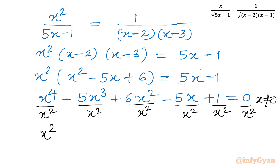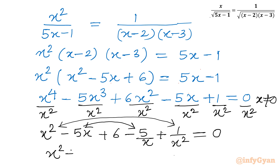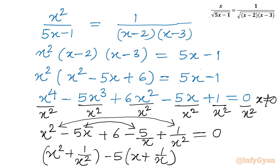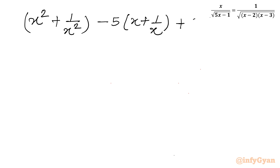After dividing by x squared the equation converts to: x squared minus 5x plus 6 minus 5 over x plus 1 over x squared equal to 0. Now I will club these terms together: (x squared plus 1 over x squared) in one bracket, then minus 5 common giving (x plus 1 over x), and then 6 is left. So: x squared plus 1 over x squared, minus 5 times (x plus 1 over x), plus 6 equal to 0.